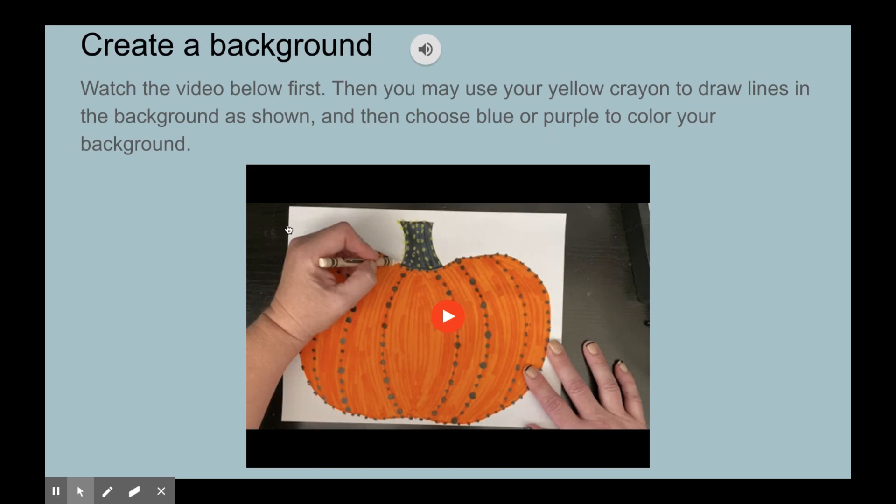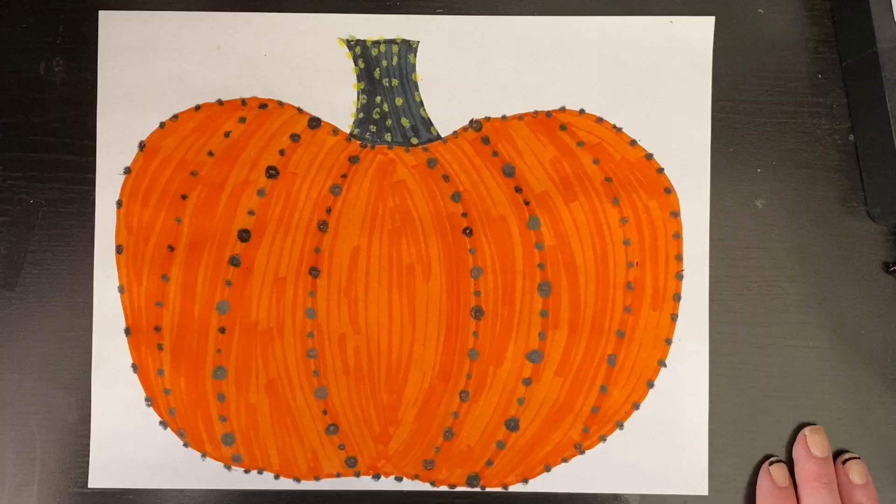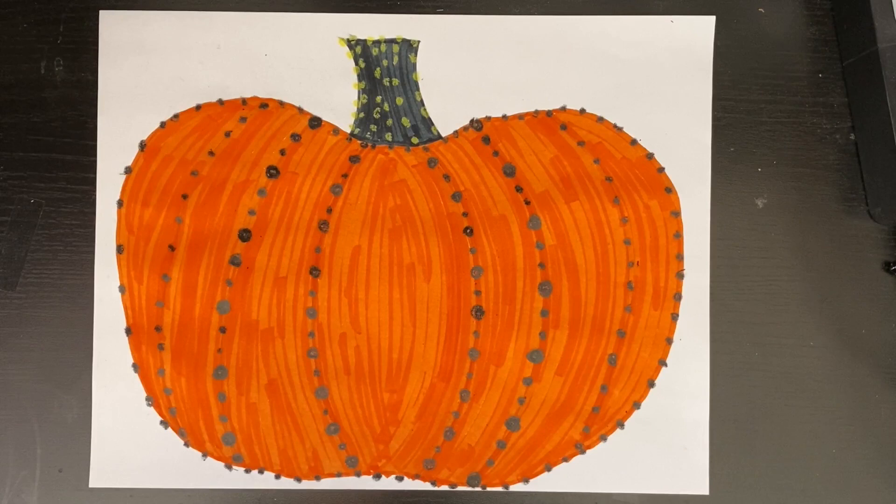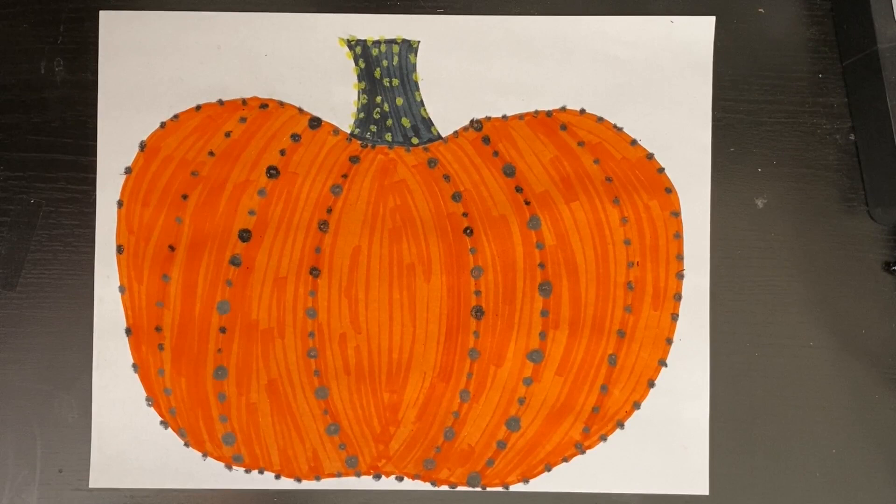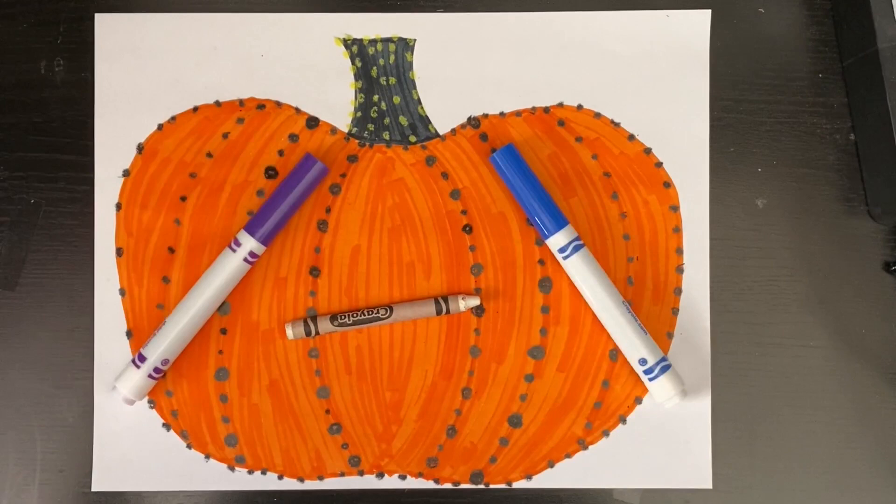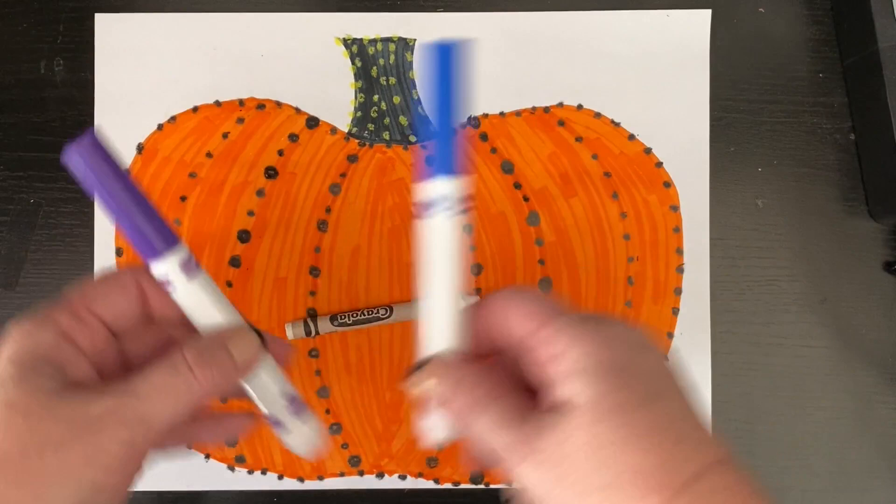If you're in kindergarten, you have the choice to keep moving on to the next step or stop here. But first and second grade, I would like you to try to do the next step. It's a little bit challenging, but I think you can handle it. This is a little bit tricky, so there's a video to show you what to do. What you're going to do is use your yellow crayon to draw lines in the background as shown, then use either a blue marker or a purple marker to color in the background. You need to do this very carefully, so really watch the video before you try to complete the background.